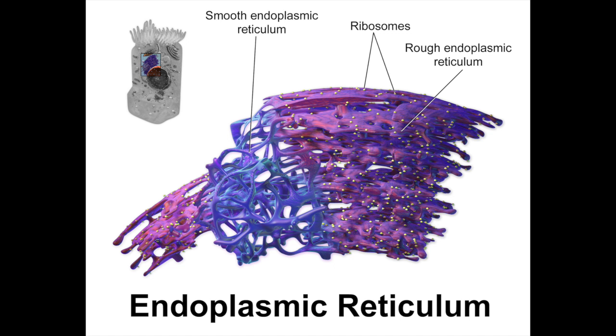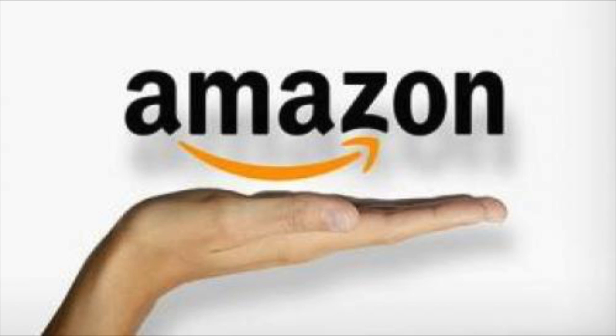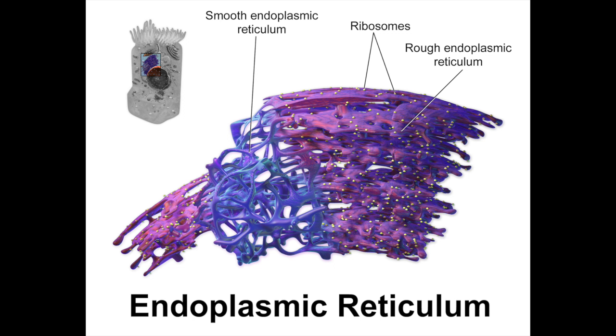The endoplasmic reticulum is also a very interesting part of the cell. It exports proteins and hormones that are inside of the cell. Imagine it's like a giant Amazon facility — it packages up stuff inside the facility and then ships them out. There are two kinds of endoplasmic reticulum: smooth ER and rough ER. Rough ER has ribosomes on the outside of it, while smooth ER does not.